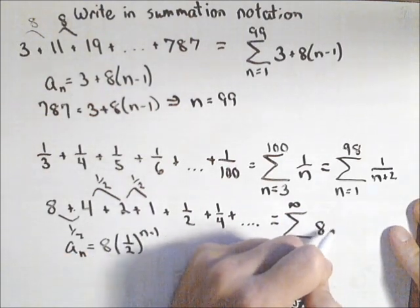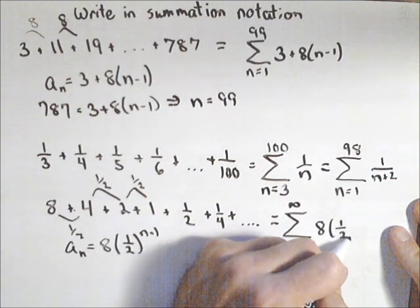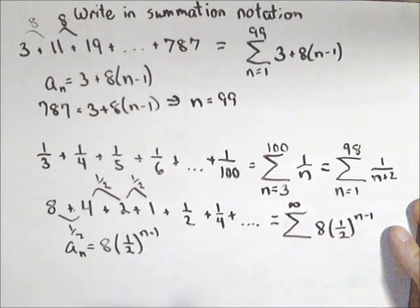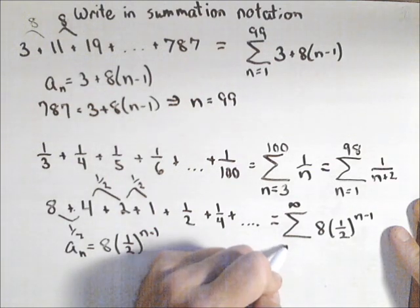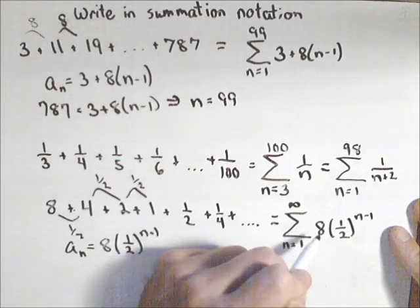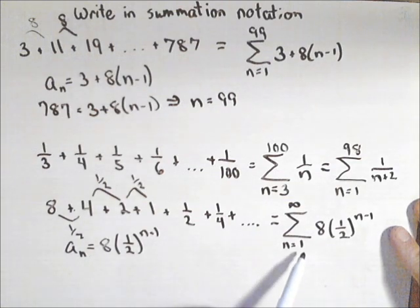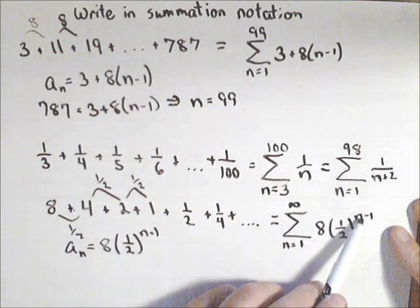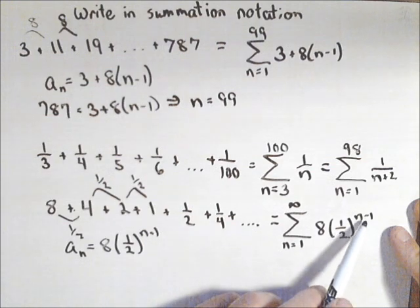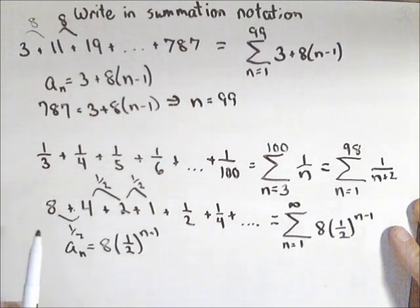So that is exactly what I put in here: 8 times 1 half to the n minus 1. Last thing I need is the starting. It's automatically n equals 1 because of the way I came up with the general term. If we check, putting 1 in, 1 minus 1 is 0. 1 half to the 0 is 1. Times 8 is 8.